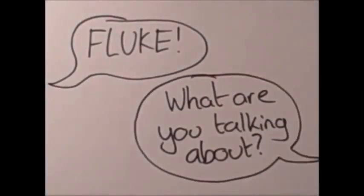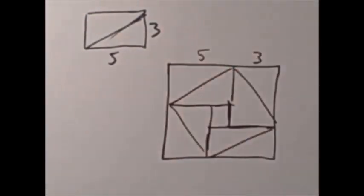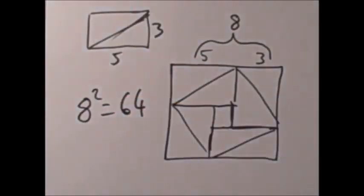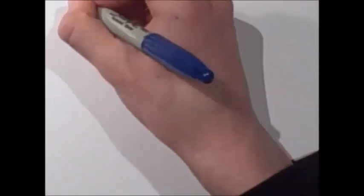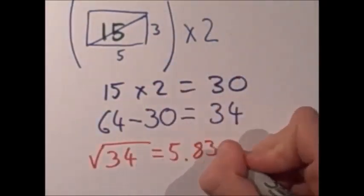Fluke! Fluke? What do you mean, fluke? Okay, let's do it with a 5 by 3. So we're going to make our square again. So 5 plus 3 is 8. 8 times 8 is 64. Now subtract our 2 rectangles, each of 15, and we get 34. Square root 34, and we get our answer.